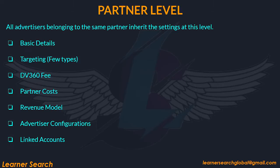At the partner level, all advertisers belonging to the same partner inherit the settings at this level. Some of the settings include basic details, targeting, DV360 fee, partner costs, revenue model, advertiser configurations, and linked accounts.